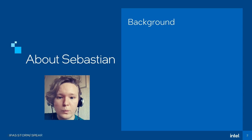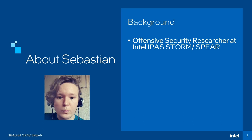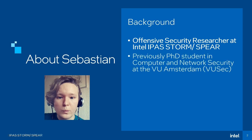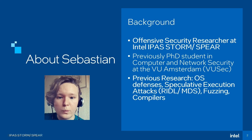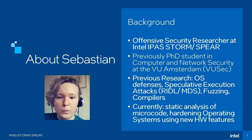I'll tell you a bit about my background. At the moment, I work as an offensive security researcher at Intel IPA Storm Spear, which is a team that focuses on offensive security research and developing mitigations. Before joining Intel, I was a PhD student at FUSEC, Frey University at Amsterdam, where my research topics include operating system defenses. I worked on side channels and transient execution techniques, so I was involved with Meltdown and MDS. Besides that, I've been working on fuzzing and compilers. Nowadays, my day-to-day duties include working on static analysis of microcode, looking at operating system defenses such as this one, and in general, looking at new hardware features and how we can use them for security.